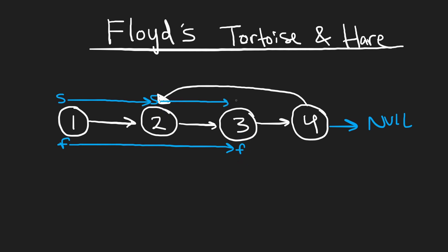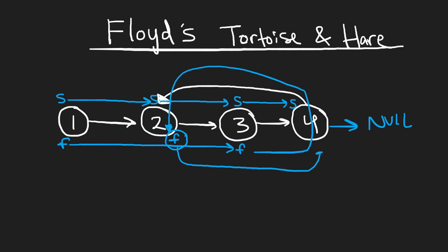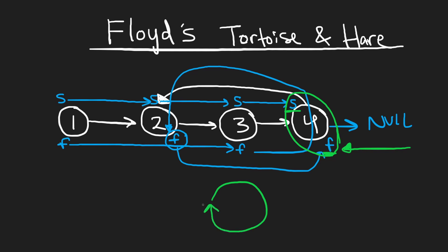Let me run the simulation. We take one more step with S, shifting it by one. F is shifted by two: first it goes to four, then follows the link back to the two position — so F has gone through the cycle. So far we've shifted each pointer twice. On the last shift, S reaches four, and F from its current position is shifted twice again and also reaches four. At this point the slow pointer and the fast pointer have met each other.